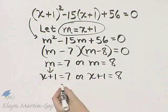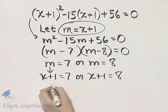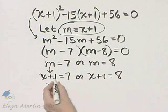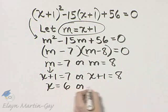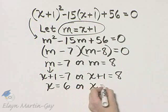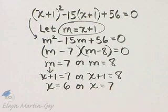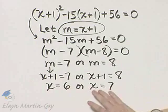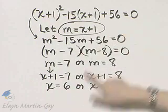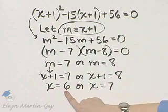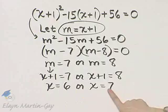And now, I'll solve each of these equations for x. Here, x is 7 minus 1, or 6. Here, x is 8 minus 1, or 7. These are solutions for x, which is originally what we want, so the solutions are 6 and also 7.